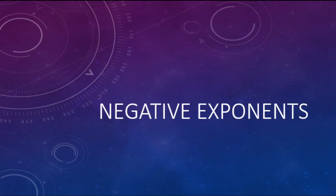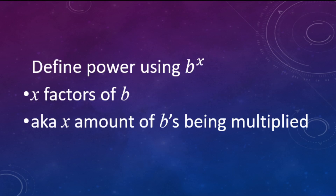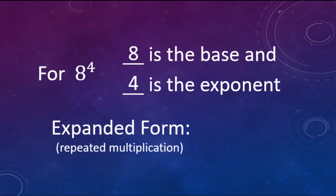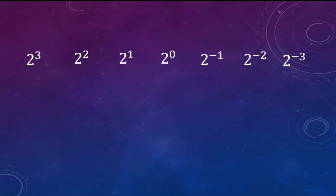For this video we're going to do a quick introduction to negative exponents. Before we get to negative exponents, let's remind ourselves what powers are. B to the x power means you have x factors of b — factors are things being multiplied. Looking at 8 to the fourth: 8 is the base and 4 is the exponent. In expanded form, that's four 8s being multiplied together: 8 × 8 × 8 × 8.